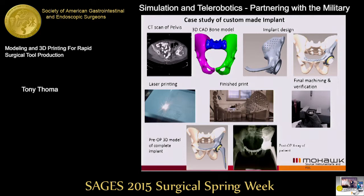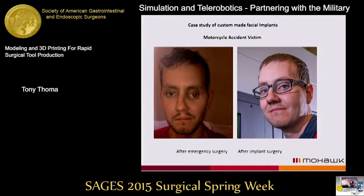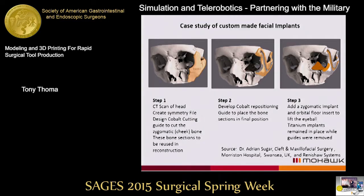A recent case in England — a gentleman had a motorcycle accident with emergency surgery, but with some disfigurement: his eye socket was lowered and his cheekbone was not symmetric. Surgeons scanned his skull, created a CAD file, designed a cutting guide to remove bone, designed a repositioning guide where bone fragments would go back in to create conformity, and a titanium structure was developed and inserted, along with an orbital lift as well.